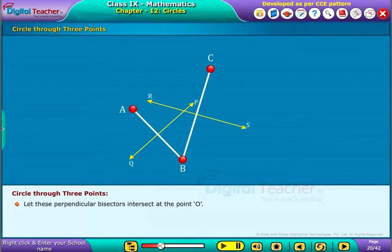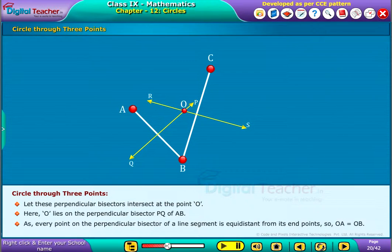Let these perpendicular bisectors intersect at the point O. Here, O lies on the perpendicular bisector PQ of AB. As every point on the perpendicular bisector of a line segment is equidistant from its endpoints, so OA is equal to OB.